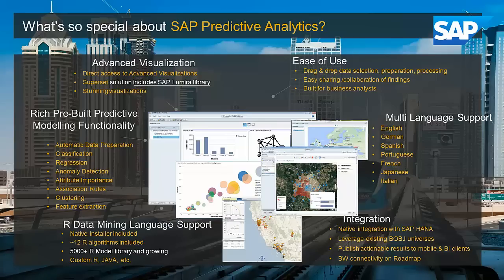All these capabilities can be applied to different datasets to gain real business value. And if that's not enough, you can also use the R language, embedding R statistical models inside Predictive Analyzers. If you have SAP HANA, everything comes together — the visualization, the ease of adding algorithms, and HANA's in-memory power to process complex data mining algorithms.